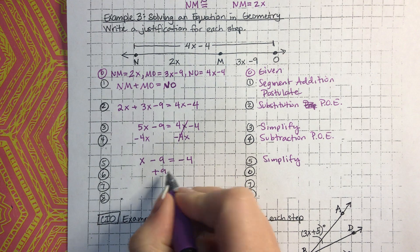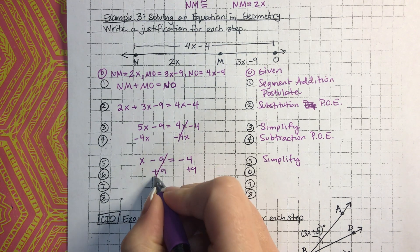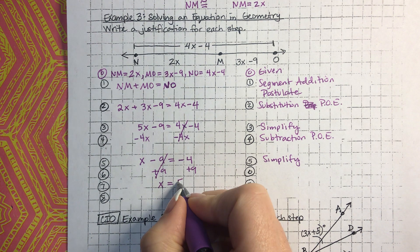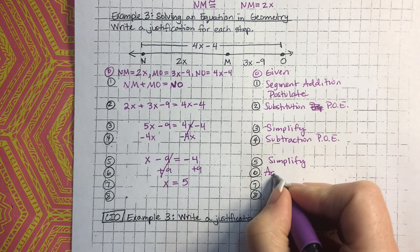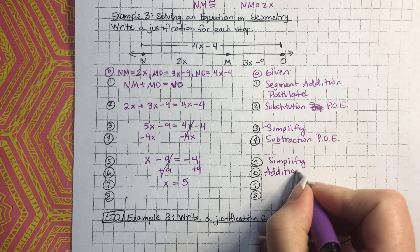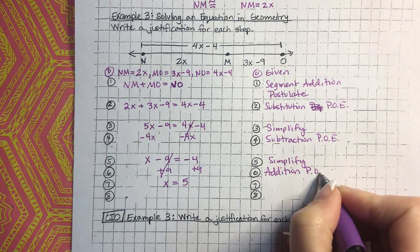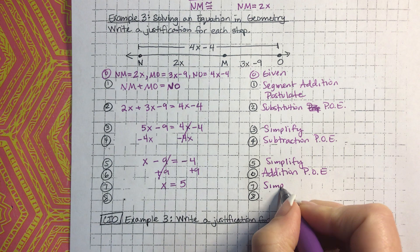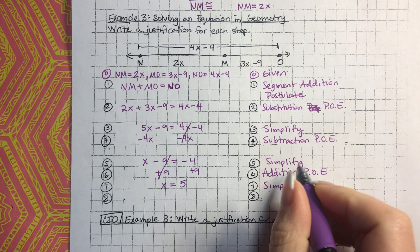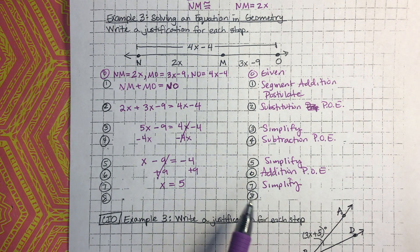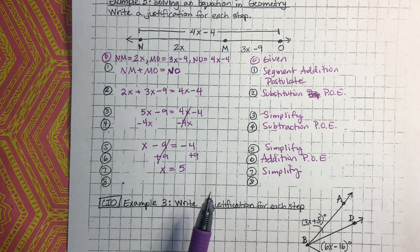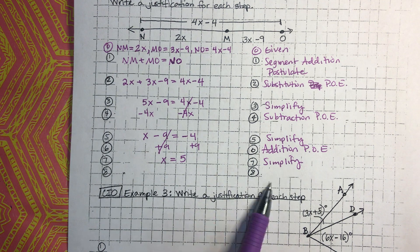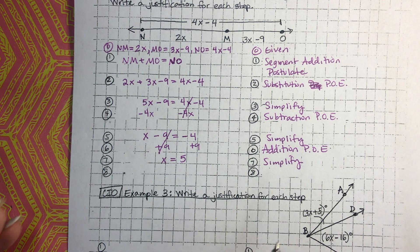Then we add 9 to both sides — that's the addition property of equality. That cancels, and we're left with x equals 5. Don't get hung up on the number of steps; if you need more or fewer lines, that's okay.